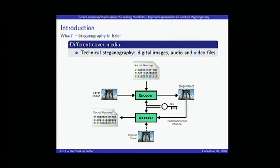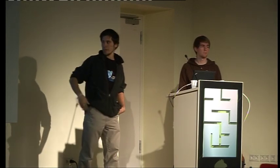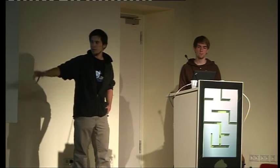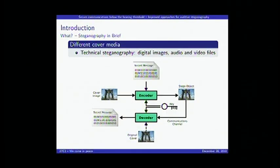In steganography we have a cover medium — for example an image — into which we embed secret information using an encoder. This encoder produces a so-called stego object: the cover medium modified slightly to also represent the secret information. The stego object is transferred over the communications channel to the receiver, who acts as a decoder to extract the secret information back out.